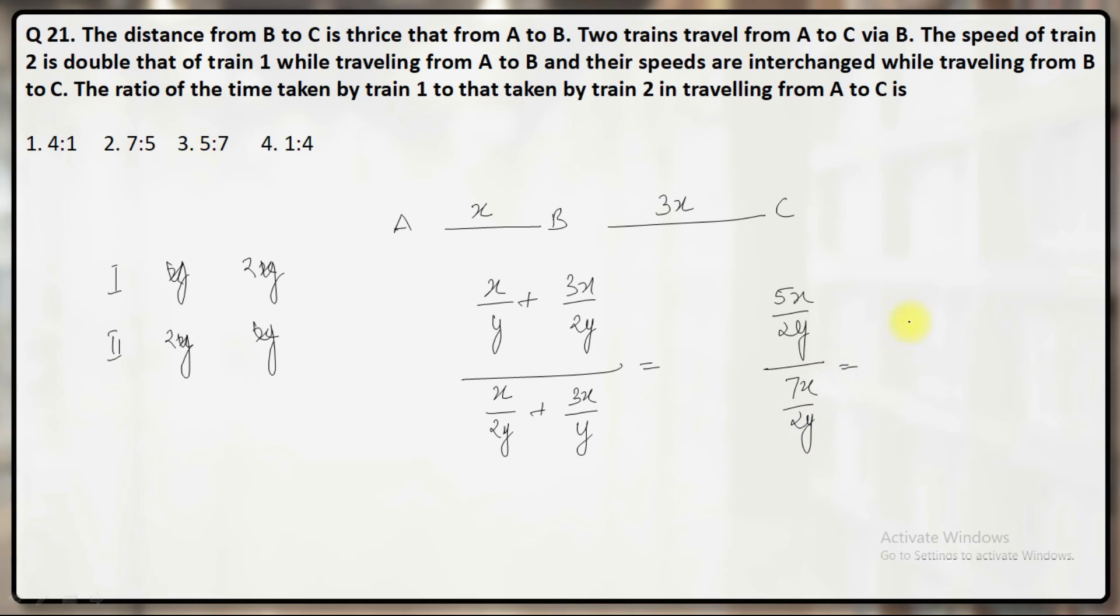2Y, 2Y cancel out, I will get 5 by 7. So the ratio of the time taken will become 5 is to 7.